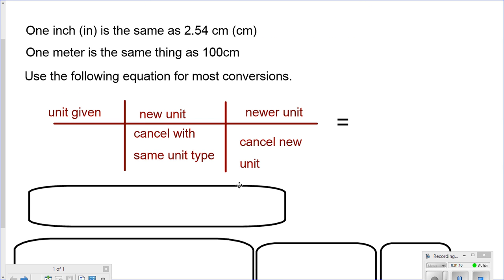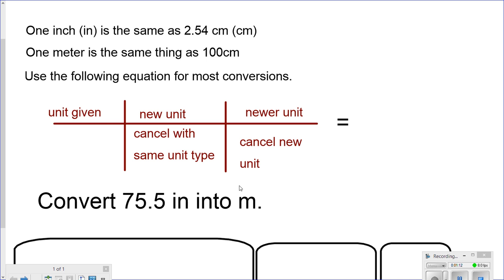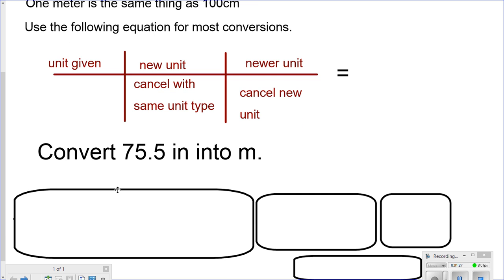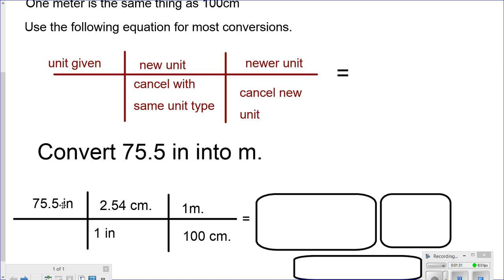Let's do an example. Convert 75.5 inches into meters. We'll do this in two steps, as we see over here. The first thing that we do is write down the given unit. So let's write down the given unit. In this case, it's 75.5.